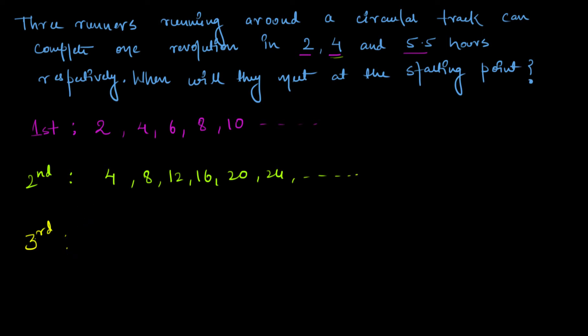The third runner takes 5.5 hours, he's the slowest. He completes it in 5.5 hours, then again in double of 5.5, that is 11 hours, then 16.5 hours, and this will continue.